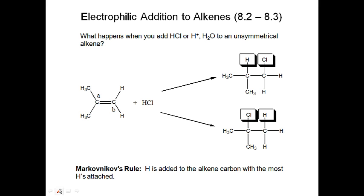This is the pre-class lecture video for Monday, November 19th. For Friday's lecture, we talked about adding H+ and then some nucleophile — either X plus H minus, or H+ and then H2O — to an unsymmetrical alkene, which could give formation of a major and a minor product.